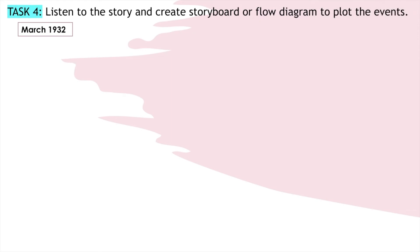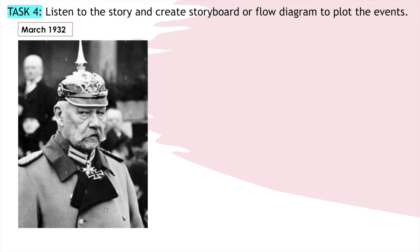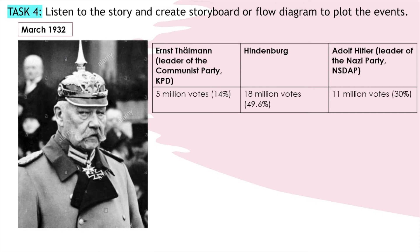Hindenburg's term of office as president ended in 1932, where at this time he was 84 and increasingly frail. But he was persuaded to stand for election again to keep the government as stable as possible. Germany had been plunged into the depths of depression after the Wall Street crash in 1929. Campaigning was bitter and often violent, and when the election took place in March 1932, the results did not bring the stability they had hoped for. No candidate received 50% of the vote, so the election was repeated in April 1932.